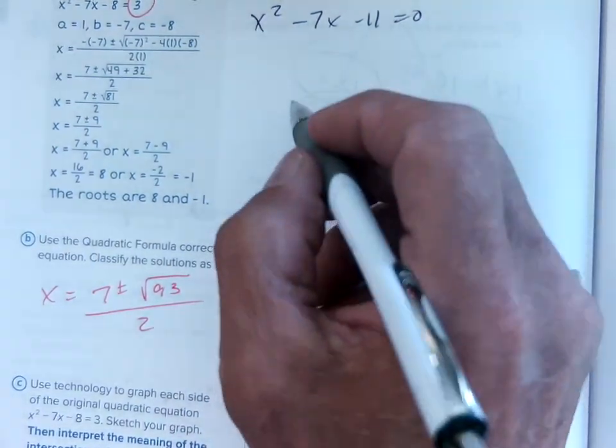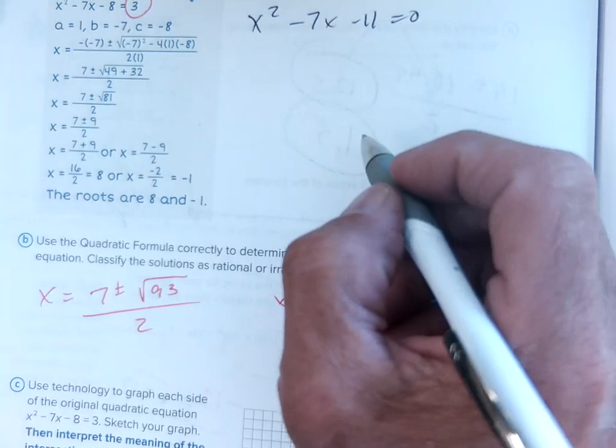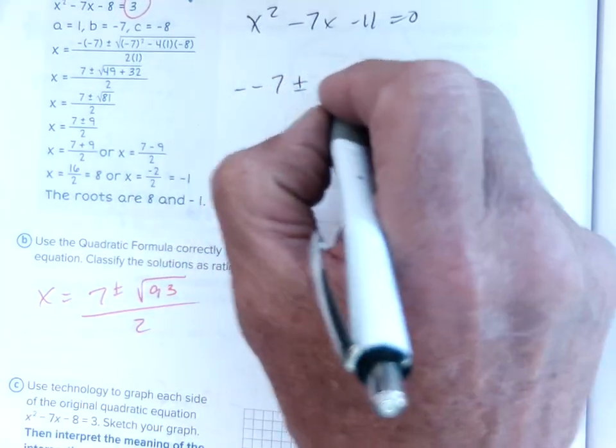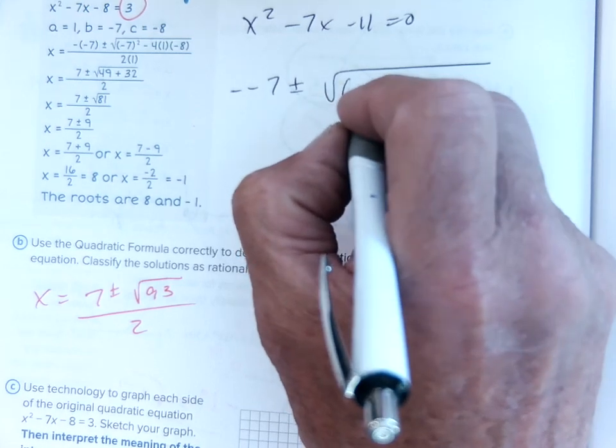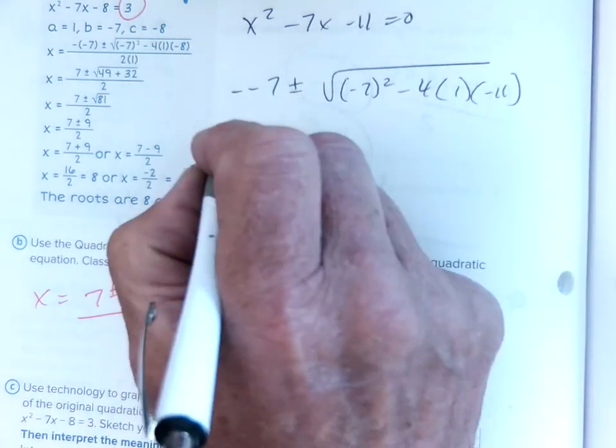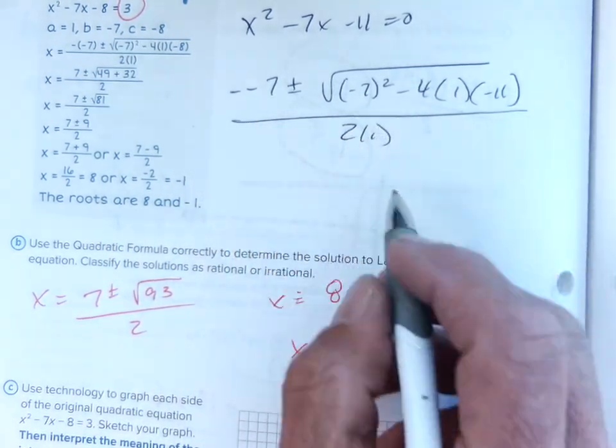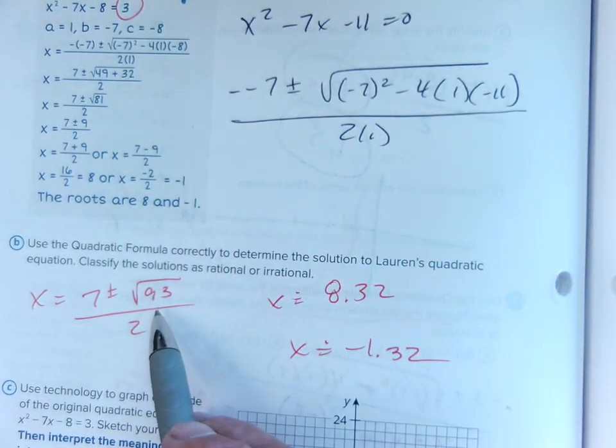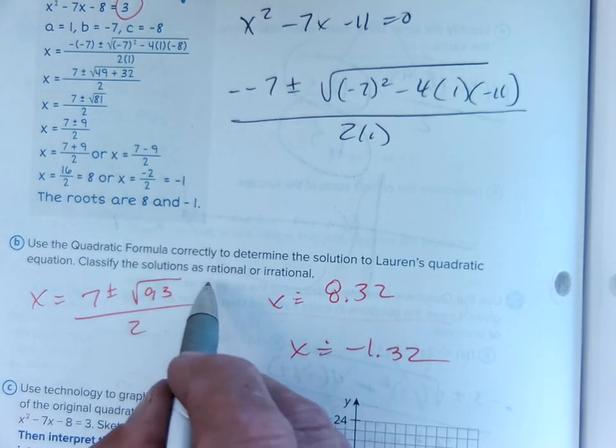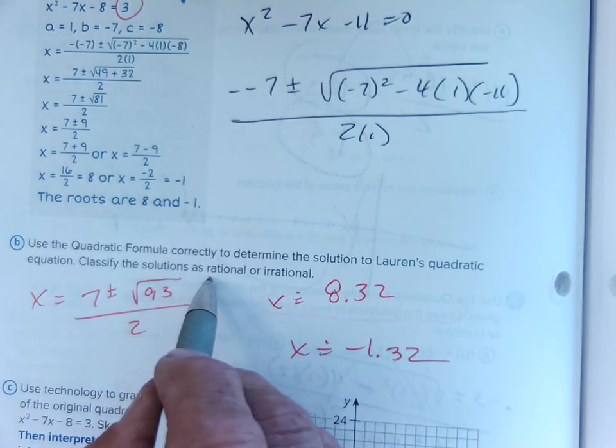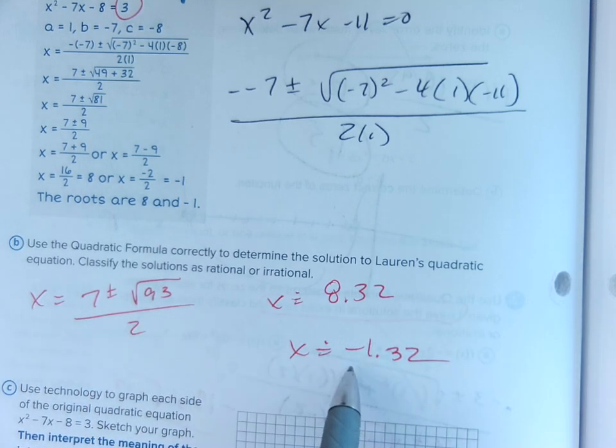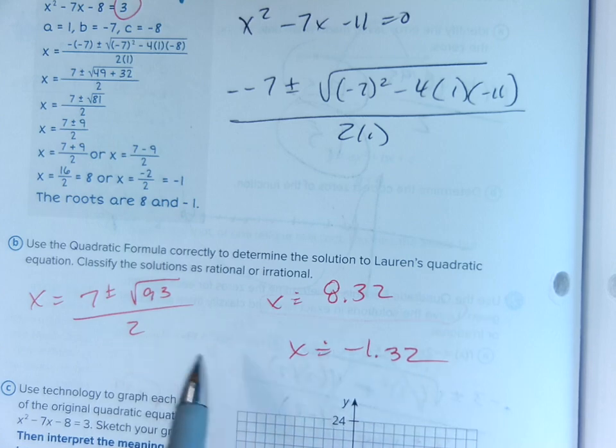And then she'd have her negative b over 2a, and then you wind up with your negative negative 7 plus or minus square root of b squared which is negative 7 squared minus 4 times a times c all over 2 times a, and then you wind up with the square root of 73. And so if you keep it as a rational solution to have an exact answer, square root of 93.